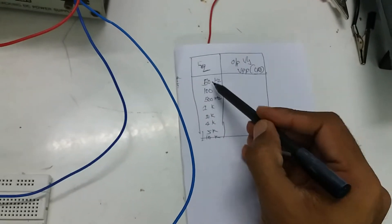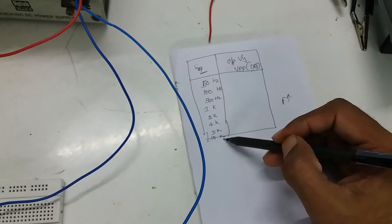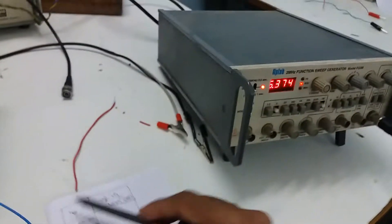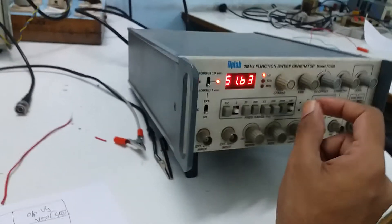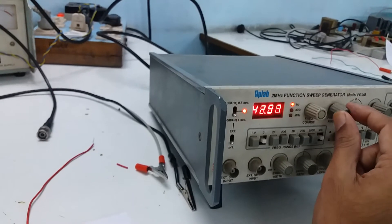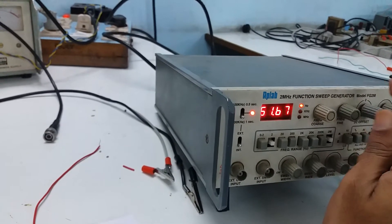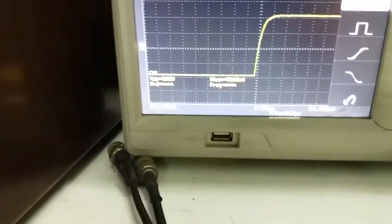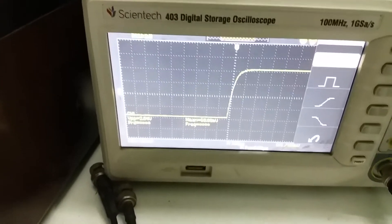Setting up the tabulation with frequencies: 50, 100, 500, 1k, 2k, 4k, 5k, 10k Hz. Setting the input frequency to 50 Hz — fine-tuned to approximately 50.3 Hz. The output voltage on the CRO is approximately 2.06 Vpp at 50 Hz.